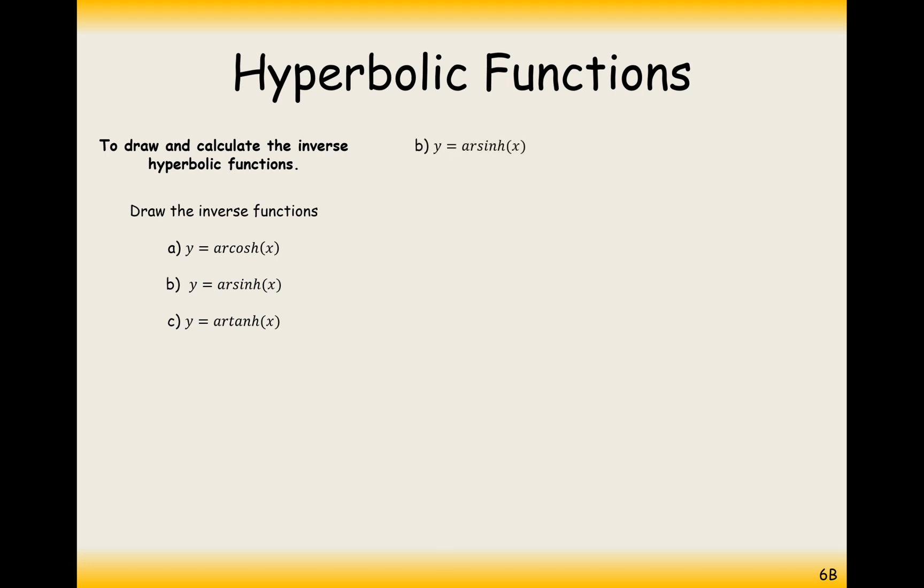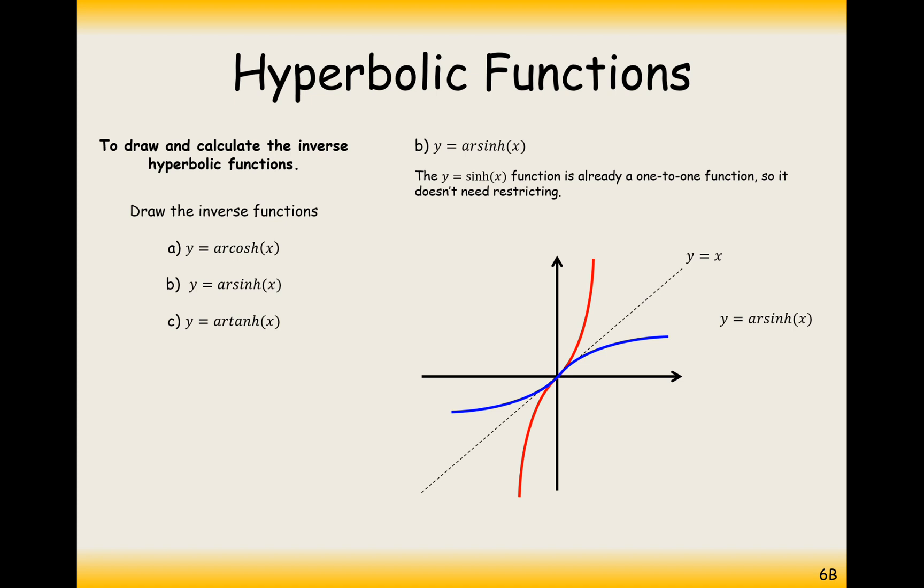Moving on to part B now, the y equals arsinh graph. Now this graph is already a one-to-one function, so it doesn't need restricting at all. Again, we'll cross over the y equals x axis. This is the original graph for sinh. And this will be the new graph for arsinh.